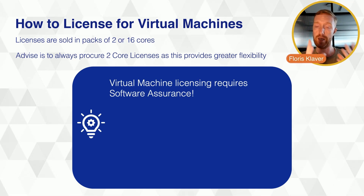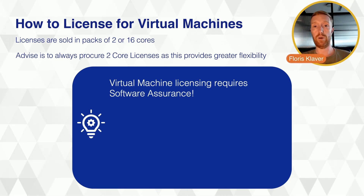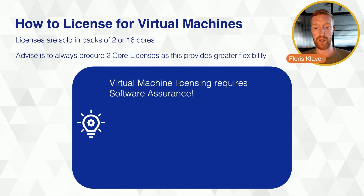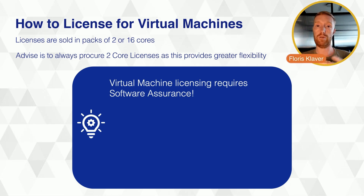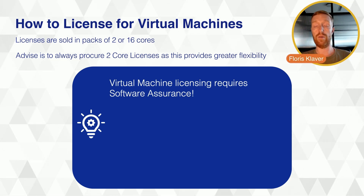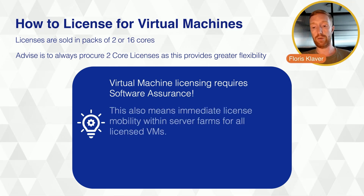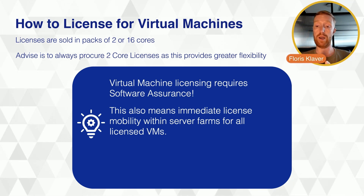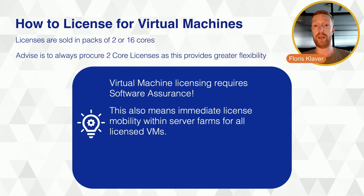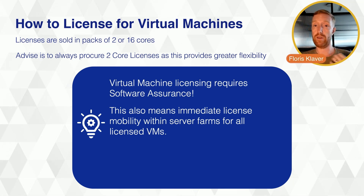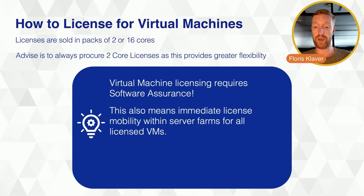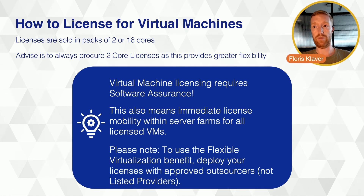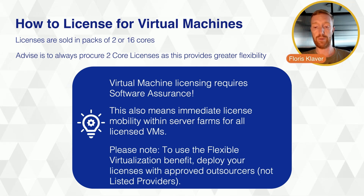One big caveat to virtual core licensing: if you license solely the virtual machine rather than the physical machine, it requires Software Assurance on all your licenses, because this is a Software Assurance benefit. If you don't have Software Assurance on your Windows Server licenses, you cannot do virtual machine licensing. This also means you immediately have license mobility within server farms for all your licensed VMs. We'll link more about license mobility in the description.